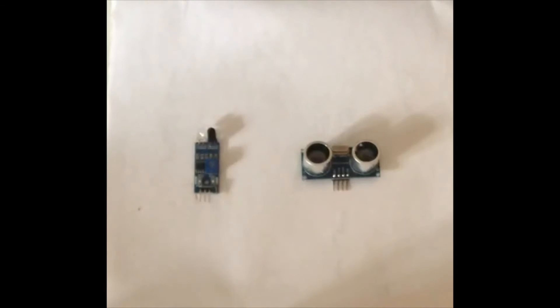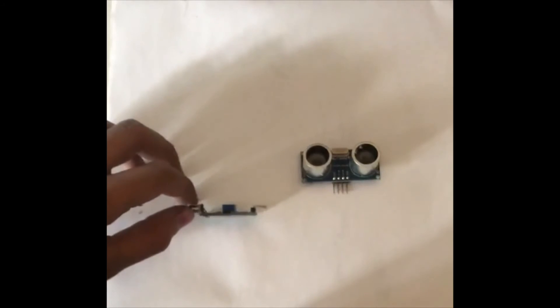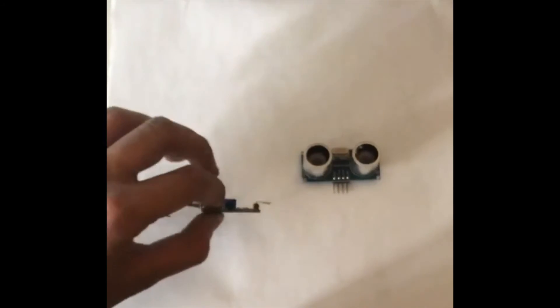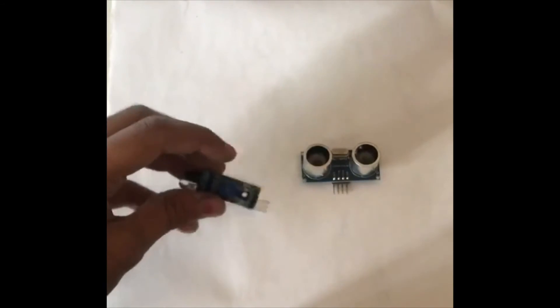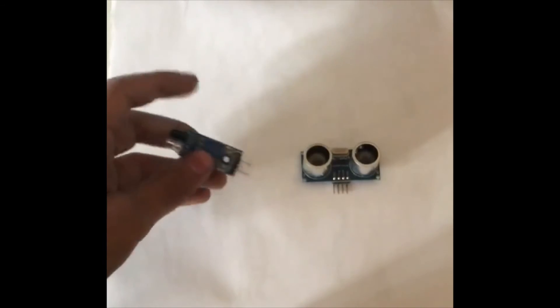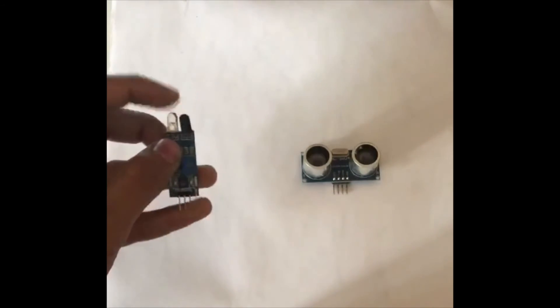Now let's talk about the appearance of the two. So an IR sensor is basically a board with a small cube over here, three pins, and two LEDs, one of which is transparent and the other one black.